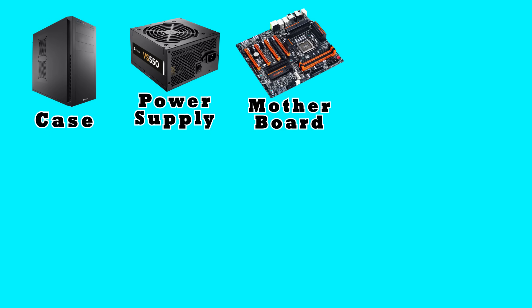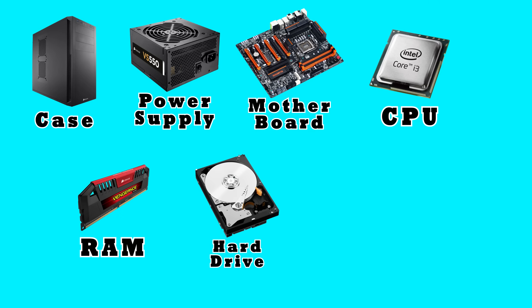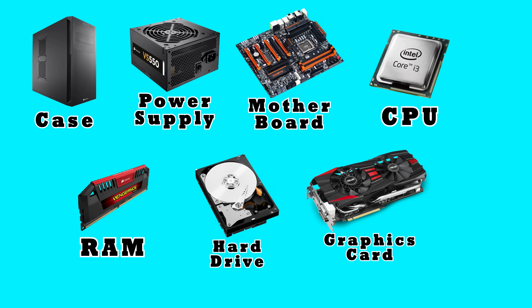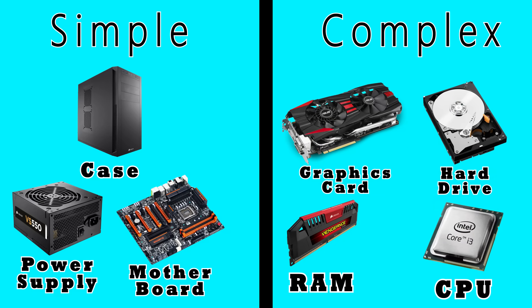Case, power supply, motherboard, CPU, RAM, hard drive, and graphics cards. These are the fundamental parts of any desktop computer. It may seem daunting at first, so let's separate these into two categories: simple ones, and the more complex ones.